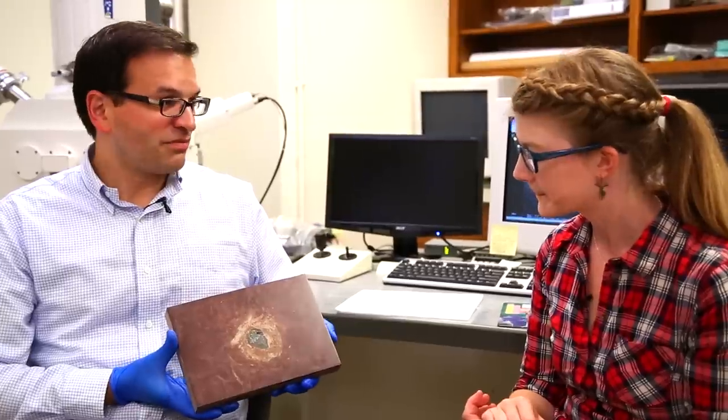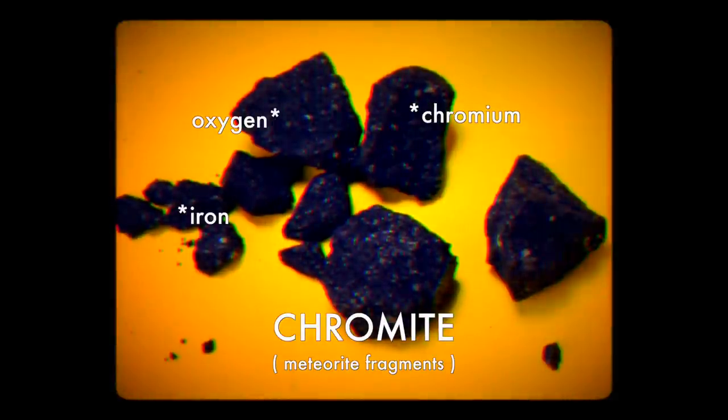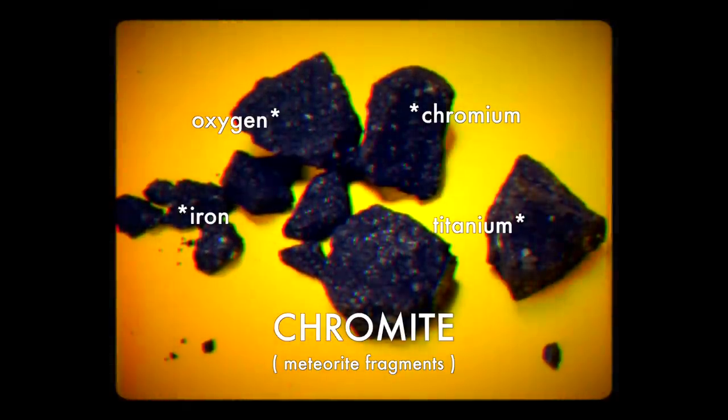The mineral that we were talking about is called chromite. It's mainly chromium and iron and oxygen, but it also has some other elements in it. And it has, for example, titanium in it. Chromites on earth, they have much less titanium than the chromites in meteorites. That's one way of identifying if it's meteoritic or not.